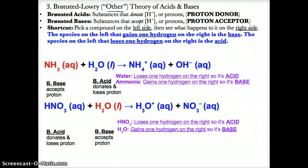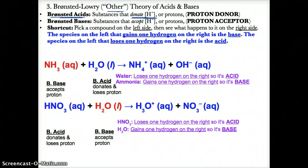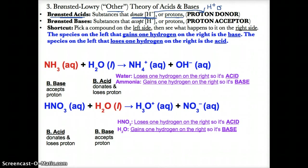Let's define Bronsted acids. Bronsted acids, by definition, are substances that tend to donate or lose H+ ions or protons. Bronsted acids are known as H+ or proton donors. The reason is that they already have a lot of H+, so they can donate it. Therefore, Bronsted acids are substances that are proton or H+ donors.